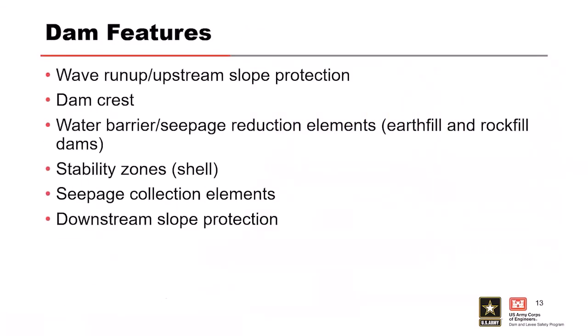At this point I'm going to walk through from upstream to downstream through the important dam features for an embankment dam design. Starting with wave run-up on the upstream slope and protection from wave action, then looking at some details of the dam crest. We're going to go through water barriers, the core of the dam, seepage reduction and control elements, a little bit about stability with the shells, seepage collection systems, and downstream slope protection.